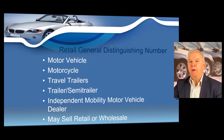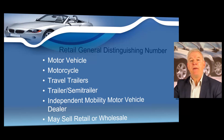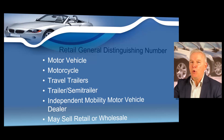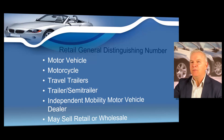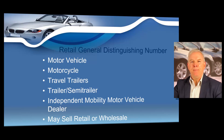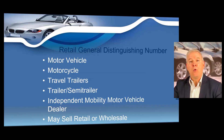Retail GDN licenses are basic licenses broken down into five categories. If you want to sell vehicles from multiple categories, you will need to have a license for each category. So if you want to sell motor vehicles and travel trailers, you will need a motor vehicle license and a travel trailer license. The five categories are motor vehicle, motorcycle, travel trailer, trailer semi-trailer, and independent mobility motor vehicle dealer. Always remember, retail dealers can sell retail to a customer on the lot or wholesale directly to another dealer or at a dealer auction.